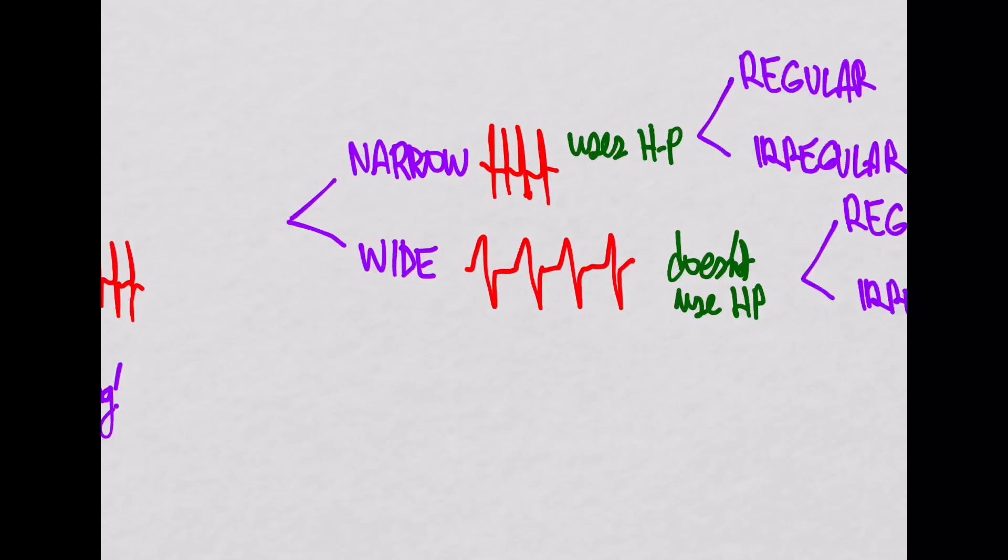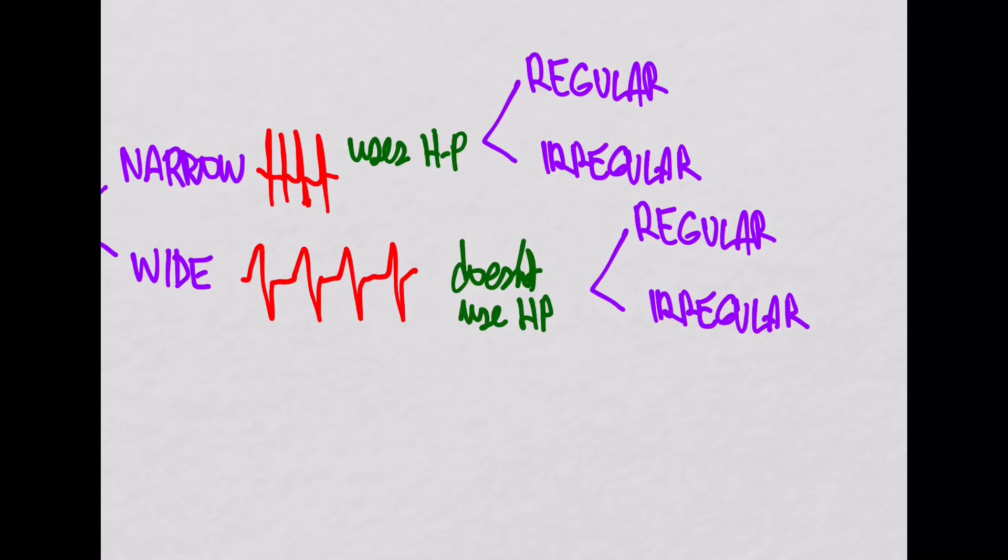Then we look at, is it regular or irregular? Regular could be things like AVNRT, it could be AVRT, especially the orthodromic ones. The irregular ones are going to be things like your AFib. And I guess you could put a flutter in here that's going to be regular too.